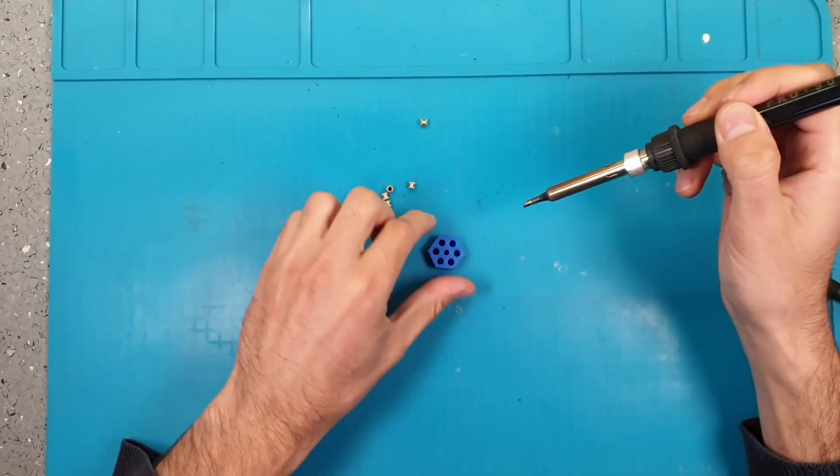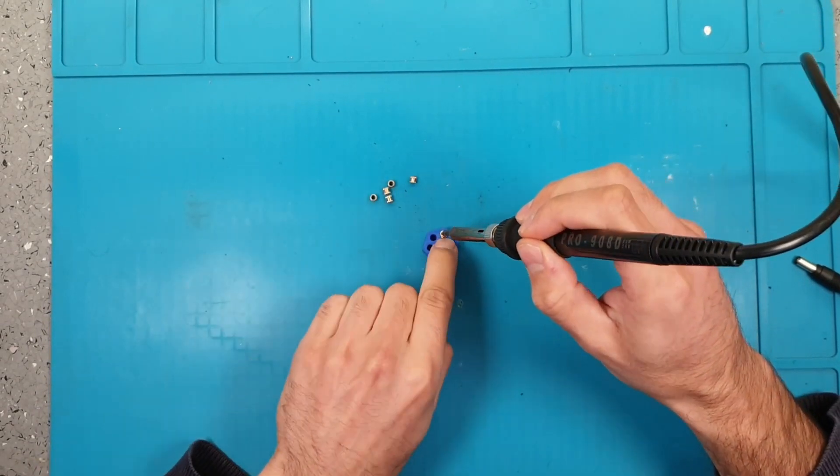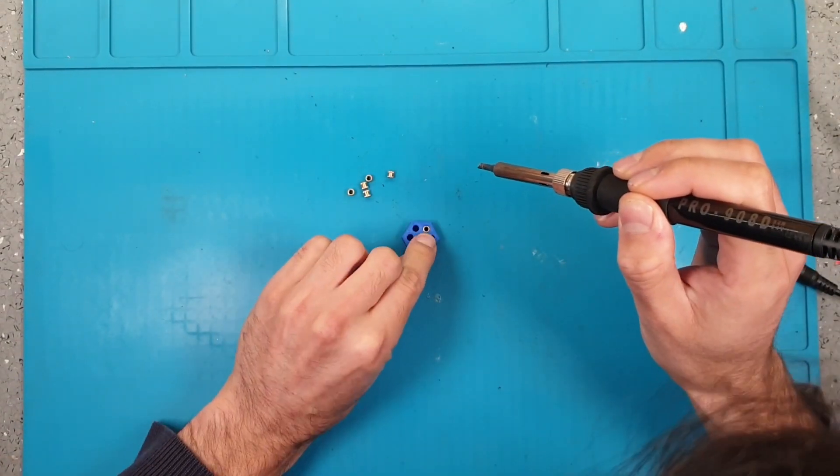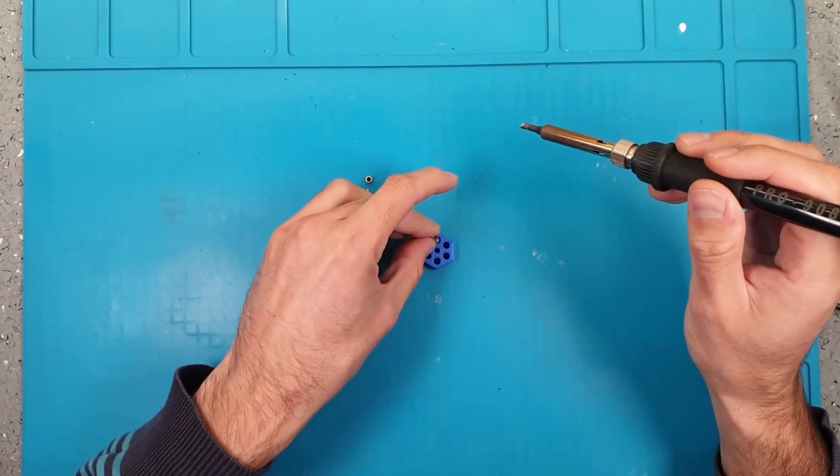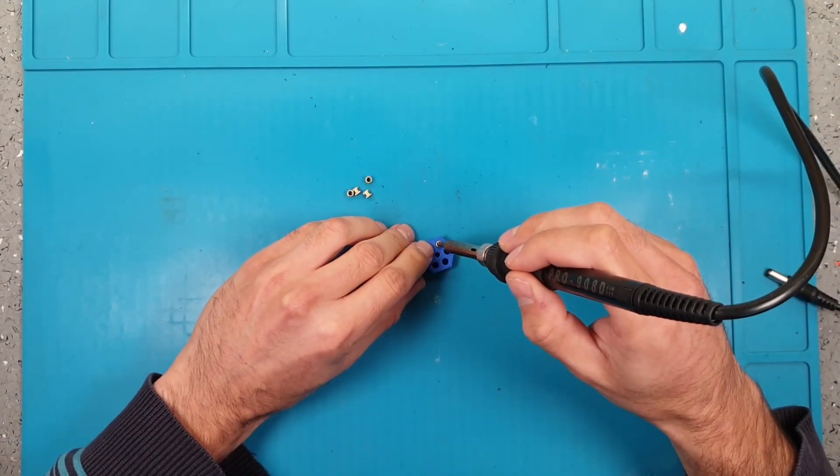Next step is to install the heat inserts in the motor shaft. To do so we will use a soldering iron. Try to keep the inserts as flush and vertical as possible.